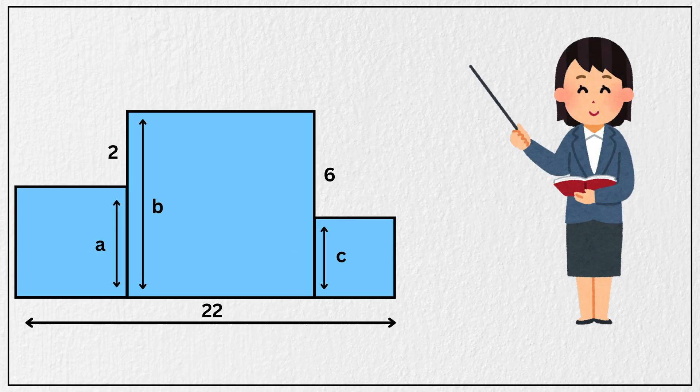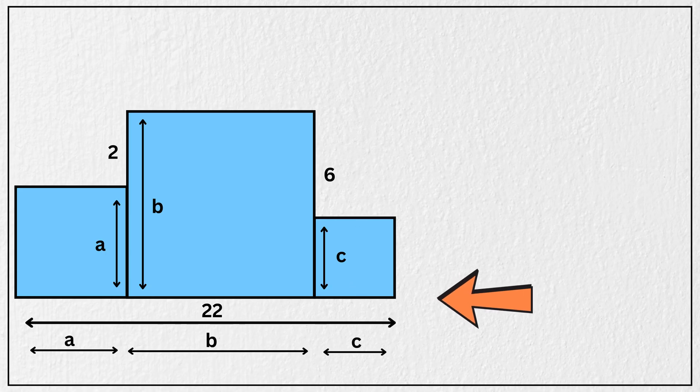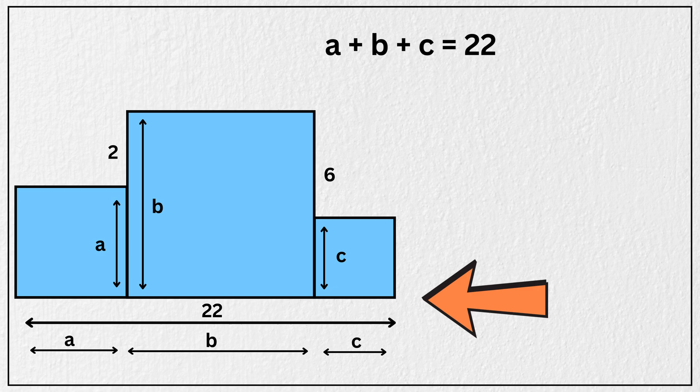Since all three shapes are squares, that means the base of this square is also A, the base of this square is B, and the base of the third square is C. So the total length of the base, which is A plus B plus C, must equal 22 units, right? Let us call this as equation 1.